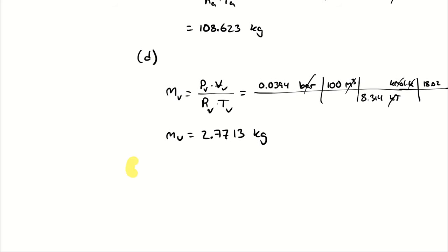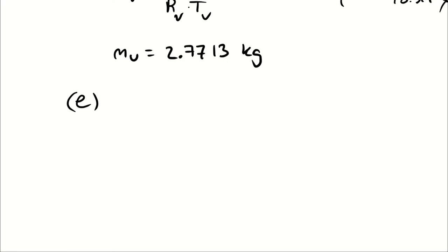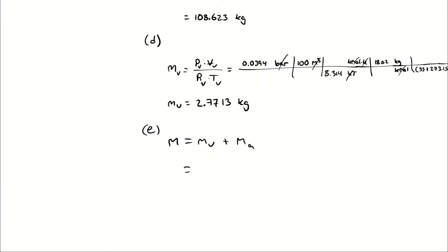For part E, I want to know the mass of the atmospheric air. That's just the mass of the water vapor plus the mass of the dry air. Since I have both numbers conveniently available, I'll use both: 108.623 + 2.771 = 111.394 kilograms.